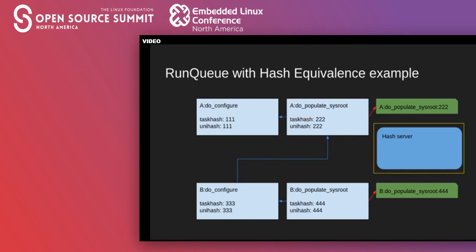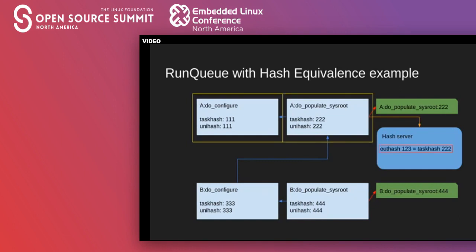In addition to the new hashes, the hash equivalents server is also shown. Execution with the hash equivalents server enabled is pretty much the same as the traditional run queue case with one exception. When s-state tasks such as DoPopulateSysRoot execute, they calculate a new hash called the output hash based on their output, and then report the mapping of their output hash and their task hash to the hash equivalents server. The hash equivalents server stores this mapping in a database for later reference.